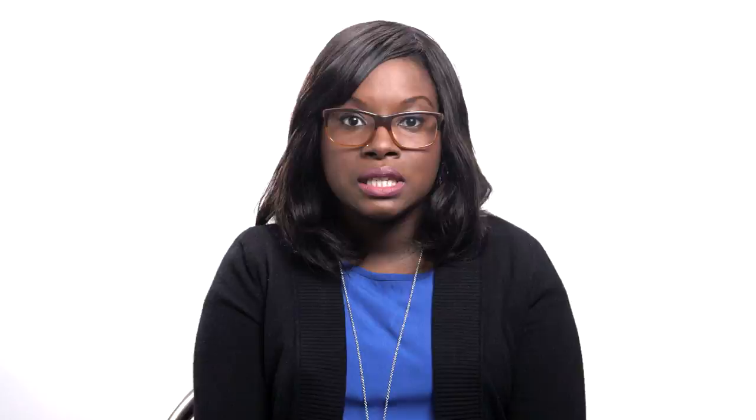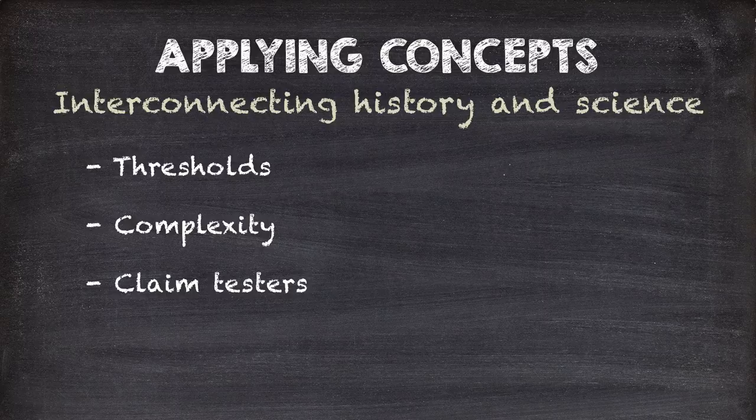When we say text, we mean all of the unit content, including videos, articles, and infographics. A big challenge for students is learning how to apply new concepts and big ideas — they have to go beyond just memorizing definitions, because it isn't just about what happened where and when. The big thing about this course is that it looks at how events interconnect with each other and with the world kids live in right now. Thresholds, complexity, and claim testers are tools students can take out of the classroom and use in their own lives.